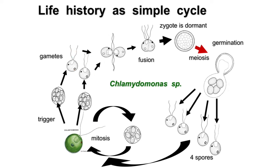These gametes, just like the mother organism, would be genetically the same. When two genetically different gametes fuse together, they would create a zygote, and the zygote is diploid. The zygote's mode of propagation would be meiosis. So all four unicellular algae produced would be genetically different among themselves.